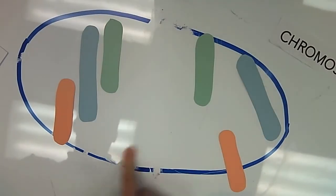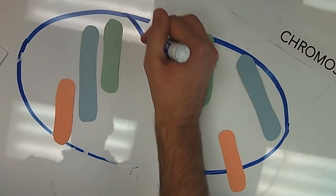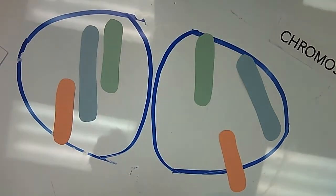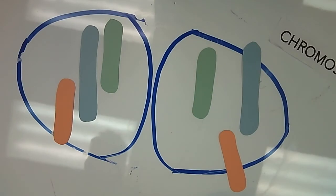And once they do that, the cell then splits. And we are left with two daughter cells.